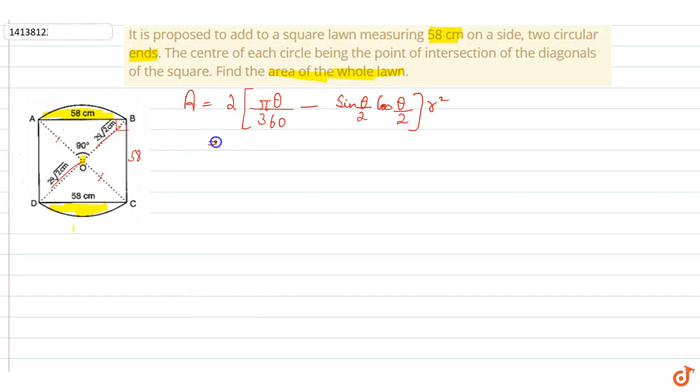Now, we have to find area of segment. Segment area: we have value put here. 2 into radius square, we have to put here 29√2 whole square into.